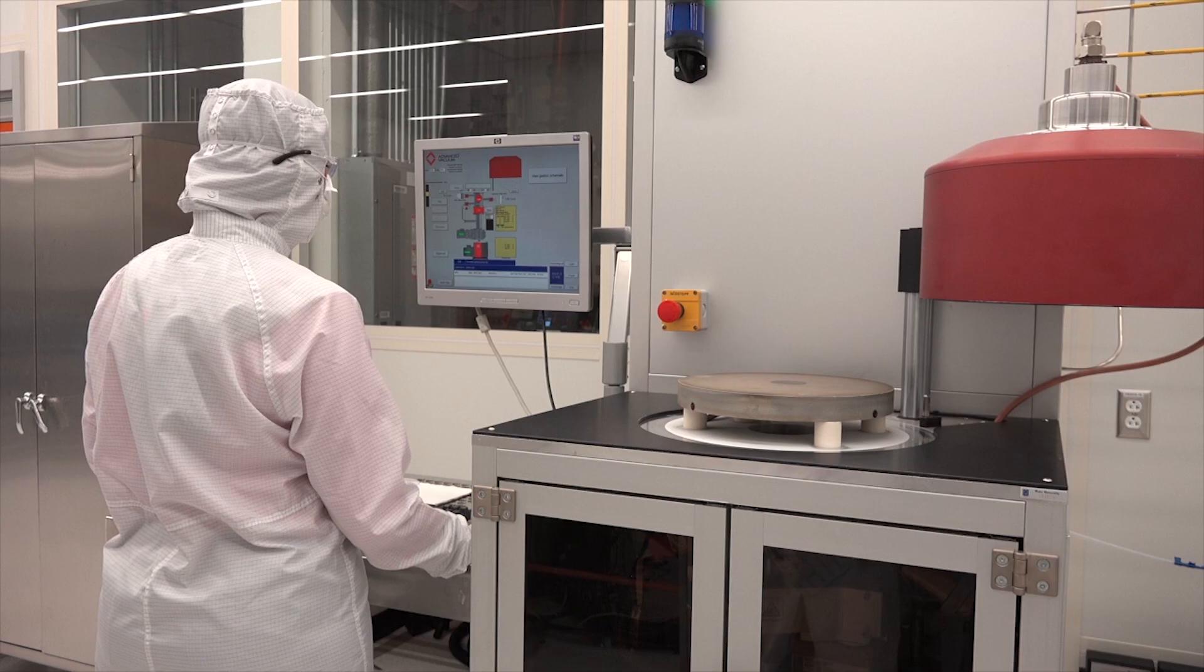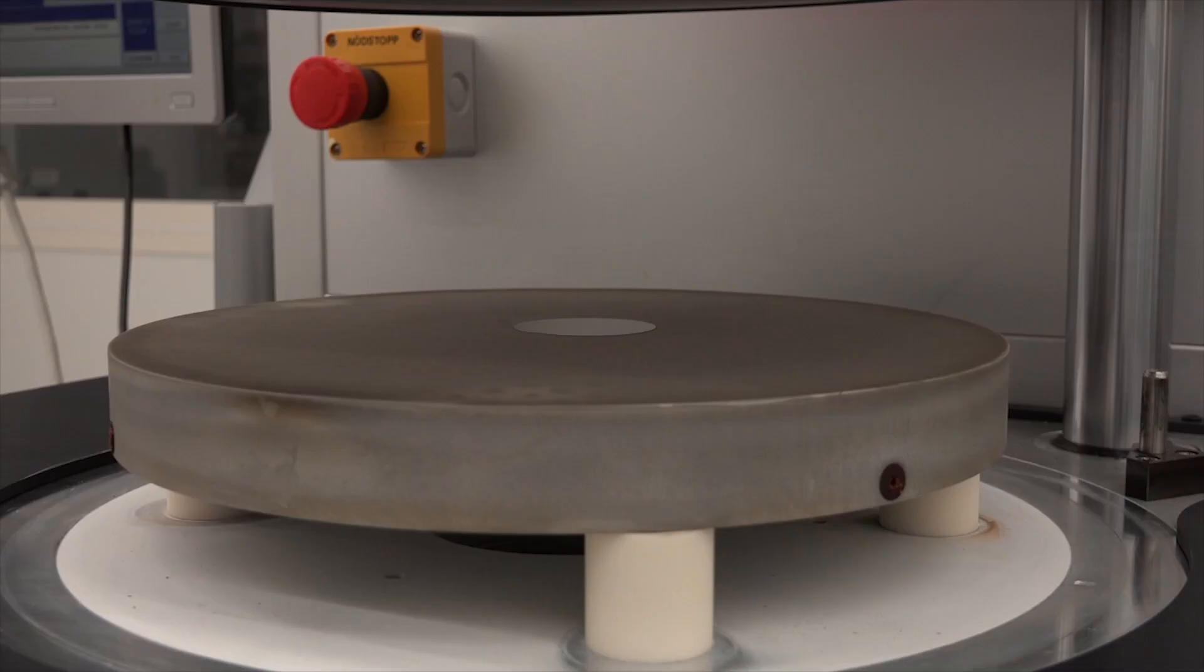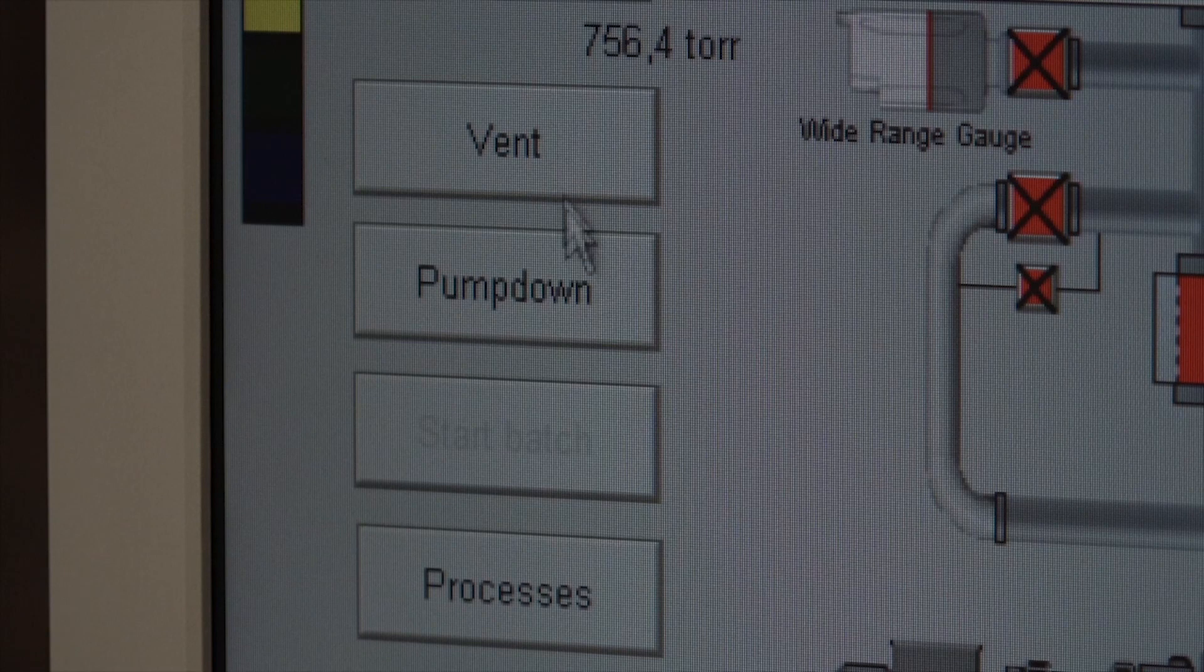With the sample in place, we can now close the chamber. We use the computer to do this. Now, we can start the pump-down sequence. The system will be rough-pumped to a pressure of about 1 times 10 raised to minus 3 torr.